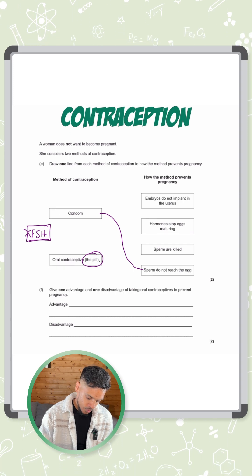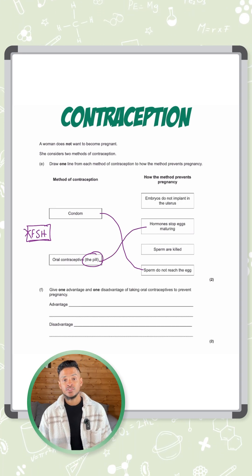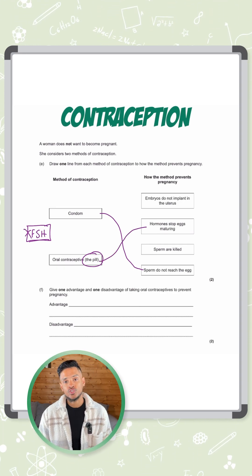So the answer here is the hormones, i.e. oestrogen, stops the eggs from maturing.